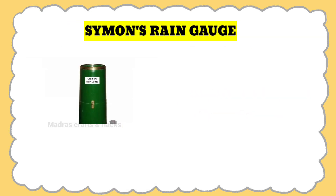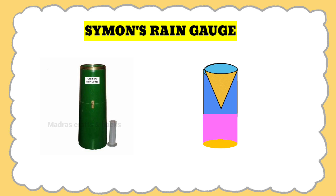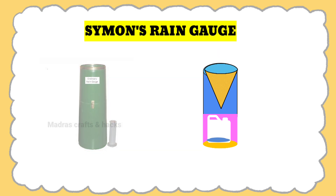The Simons rain gauge consists of a funnel with a sharp-edged rim of 127 millimetres diameter, a cylindrical body, a receiver with a narrow neck and handle, and a splayed base which is fixed in the ground. The rain falling into the funnel is collected in the receiver kept inside the body and is measured by means of a special measure glass which is graduated in millimetres.